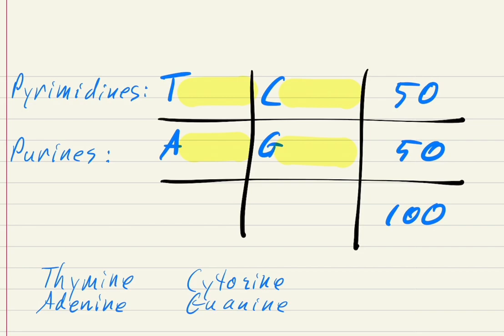The only biology you need to remember is that DNA bases — thymine, adenine, cytosine, and guanine — combine in only very particular ways. First, thymine and cytosine are called pyrimidines, and adenine and guanine are called purines. Second, pyrimidines always combine with purines in a one-to-one ratio. And lastly, thymine always pairs with adenine, and cytosine always pairs with guanine. That's all you really need to know to figure this out.